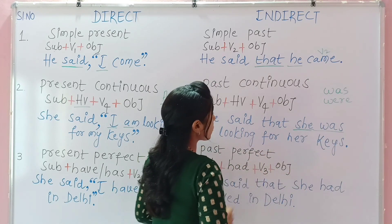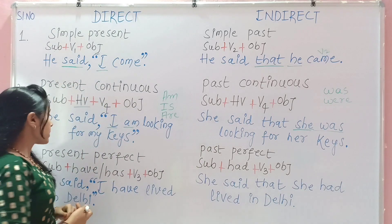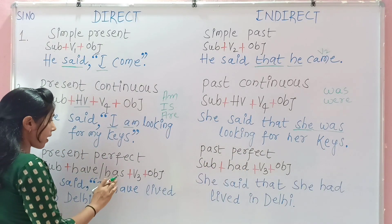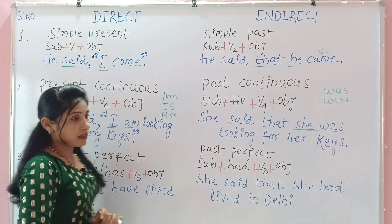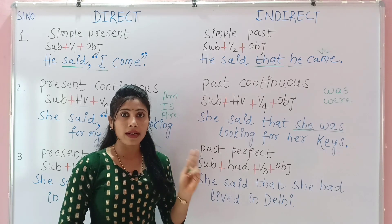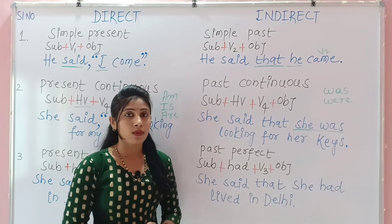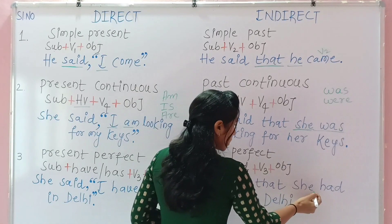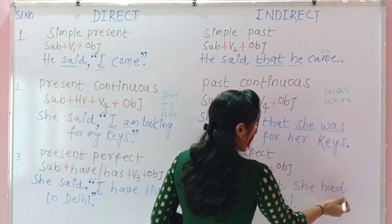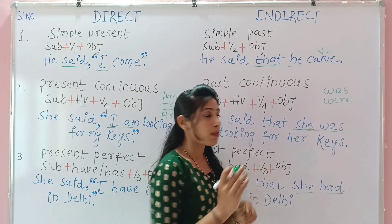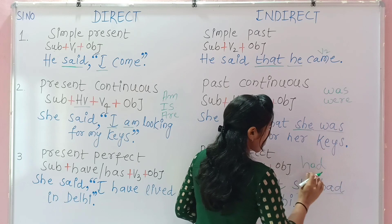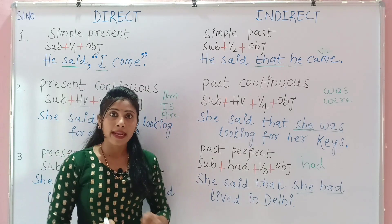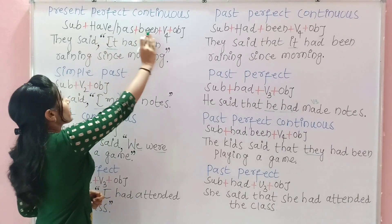Present perfect tense becomes past perfect in indirect speech. The formula is subject + have/has + V3 + object. In present perfect we use 'have' with plural and 'has' with singular. For example: 'She said, I have lived in Delhi.' In indirect speech: 'She said that she had lived in Delhi.' In past perfect we use only the helping verb 'had,' which is the past form of both 'have' and 'has,' and the main verb remains V3.